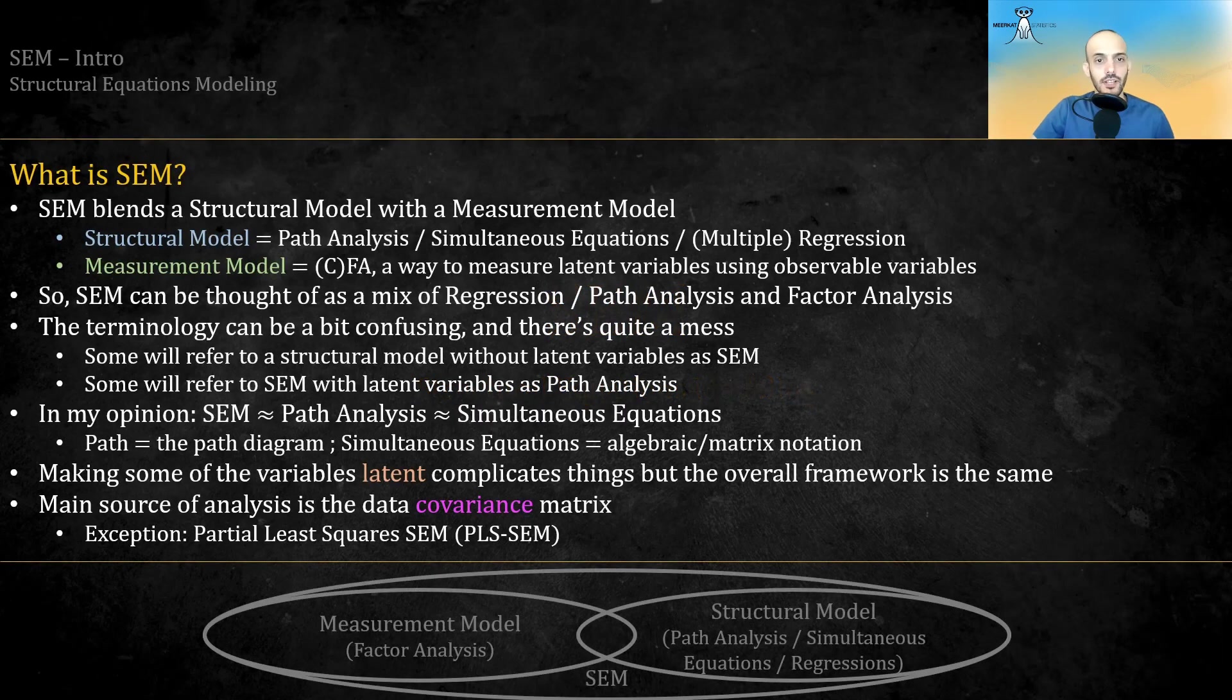SEM is a mix of two things. A structural model, also known as path analysis. In econometrics, it is known as simultaneous equations, and it can also be thought of as an extension of multiple regressions, where the dependent variables, the y's, can also appear on the right-hand side of the equations. And second, a measurement model, which is basically a CFA, a confirmatory factor analysis, and it's a way to measure latent variables using observed variables.